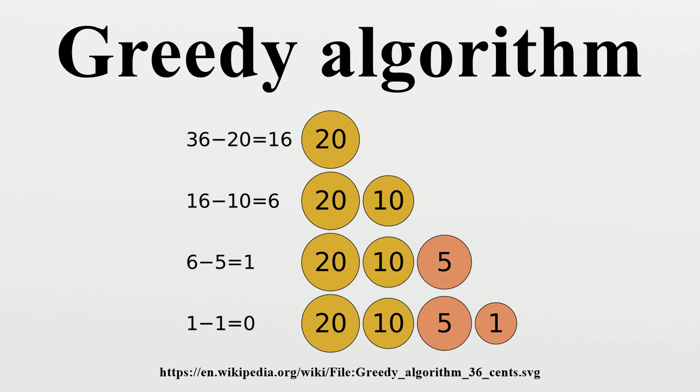A greedy algorithm finds the optimal solution to Malfatti's problem of finding three disjoint circles within a given triangle that maximize the total area of the circles. It is conjectured that the same greedy algorithm is optimal for any number of circles.